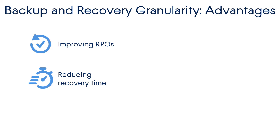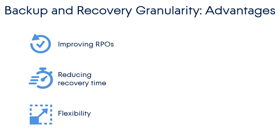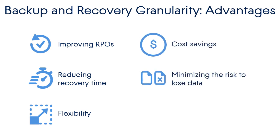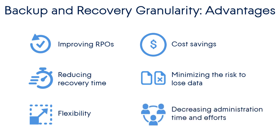Along with improving RPO, backup and recovery granularity also enhances RTO, or recovery time objective. As you remember from previous modules, RTO answers the question: how quickly do you need to get your data back? It helps define the recovery window. In the case of disaster, the recovery of that folder would take just a couple of minutes or even seconds. Backup and recovery granularity provides unprecedented opportunities in terms of flexibility, cost savings, and mitigation of risks due to lost data and administrative efforts.